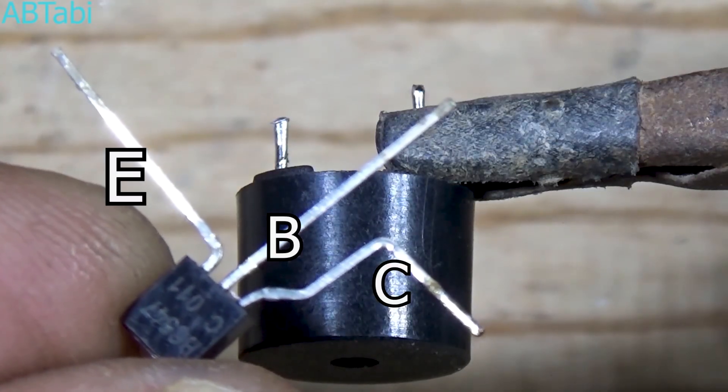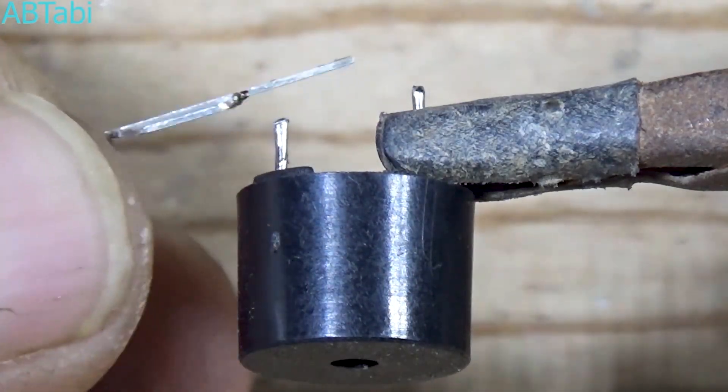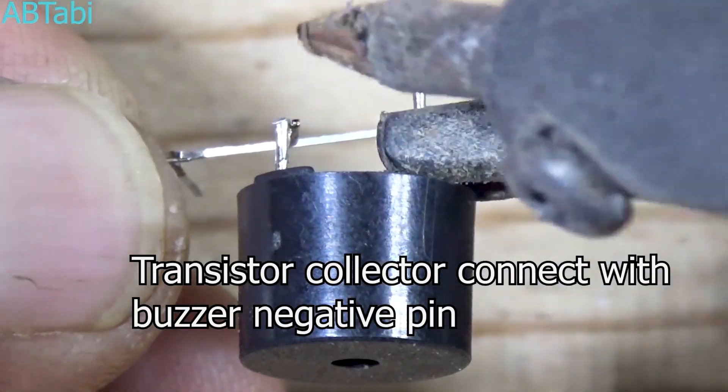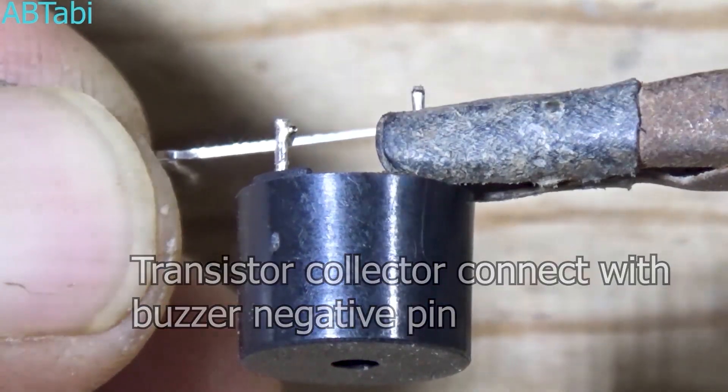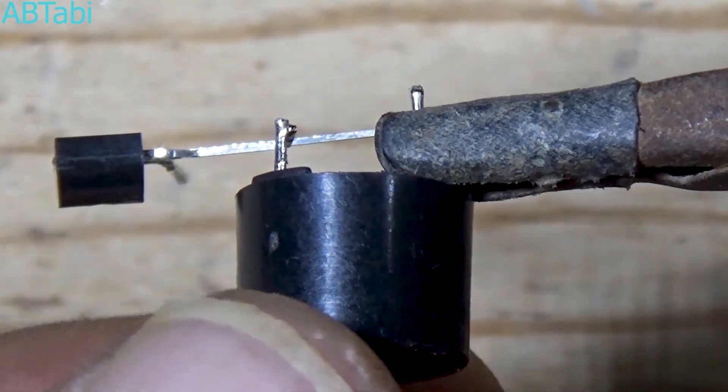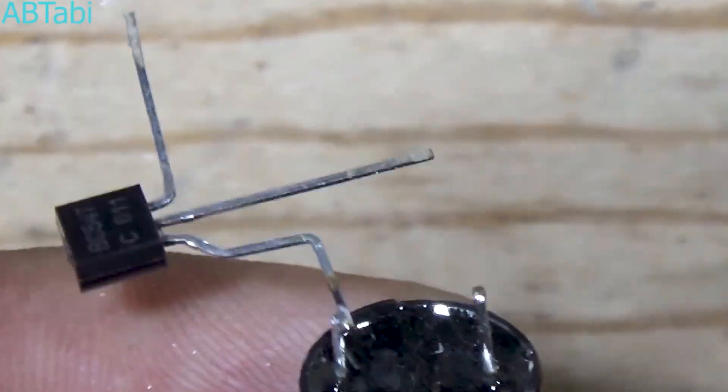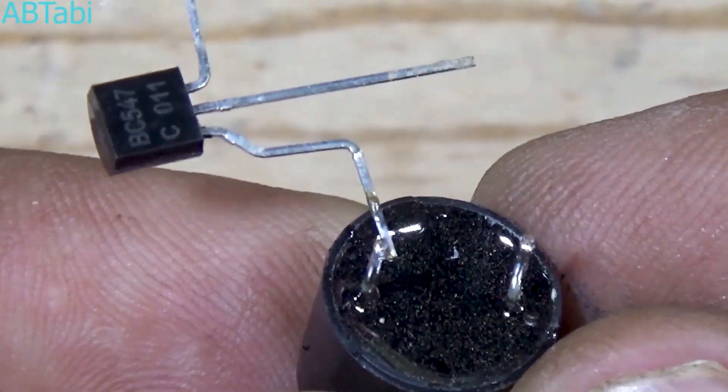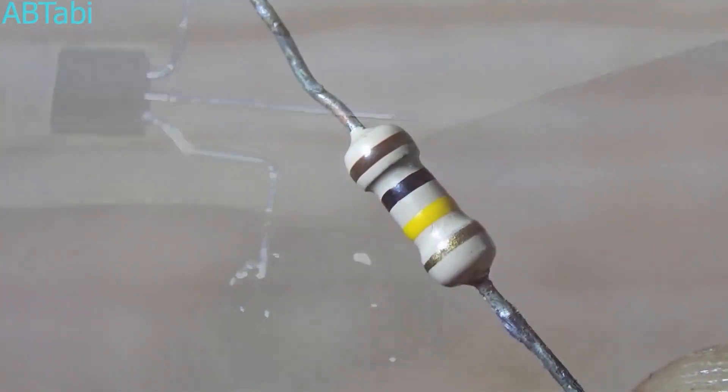Hello friends, welcome back to the channel. Today, I'm going to show you how to make a loop break security alarm circuit at home using very simple and easily available components. This circuit is cheap, reliable, and perfect for home security, door security, or room protection.